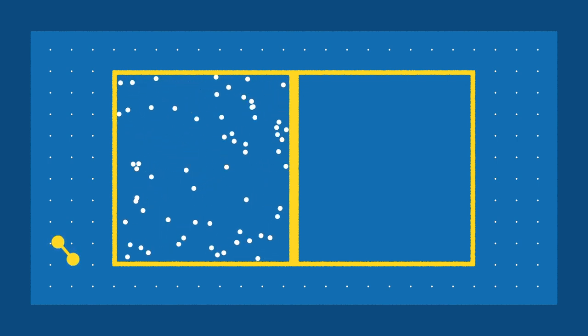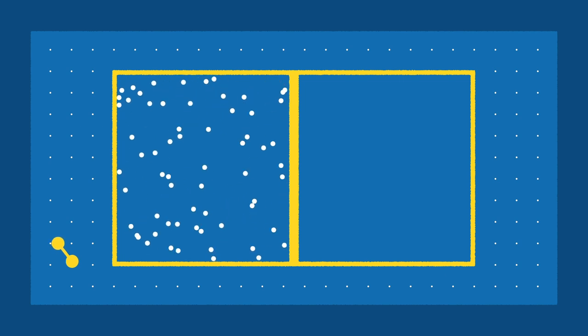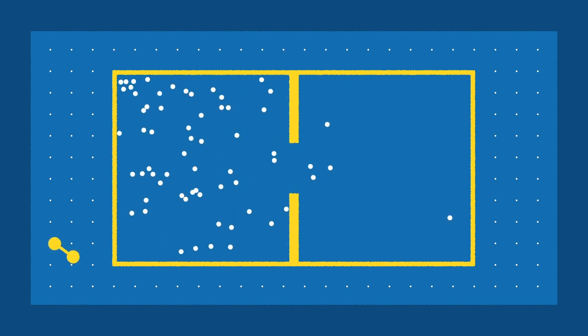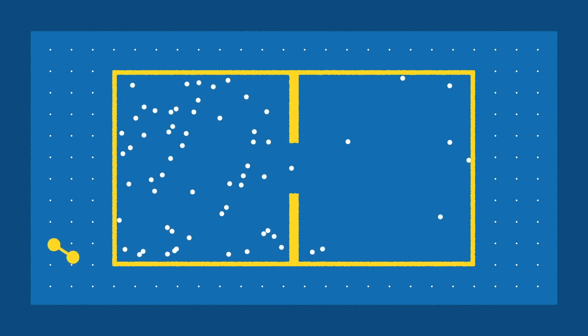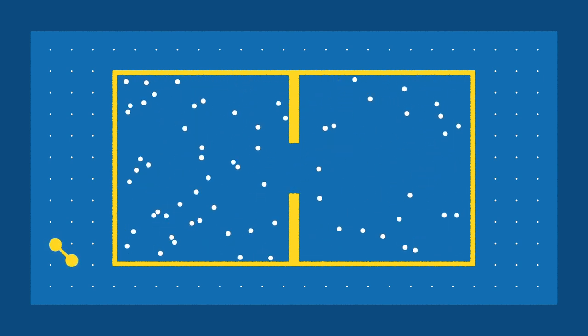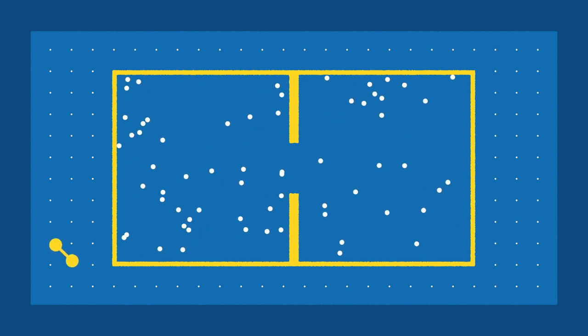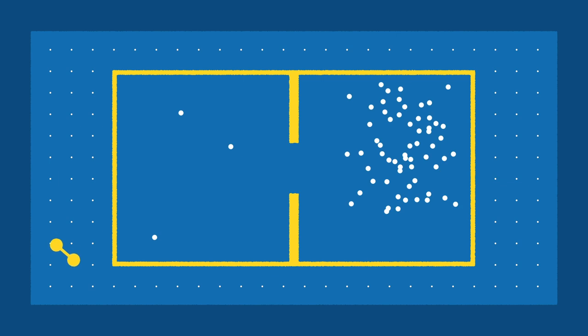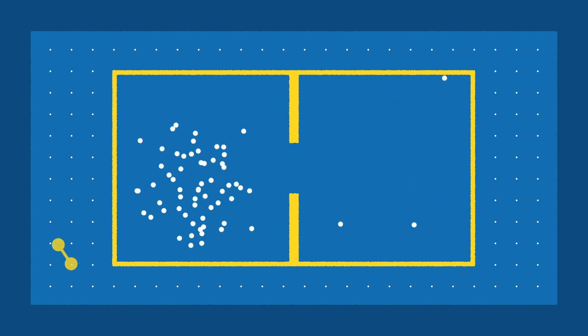Imagine a box divided in half by a wall with a hole in its middle and that at the start, most of the particles are on one side. After a time, both sides of the box will have roughly the same number of particles. You will not get a situation in which the particles are clustered like this or this.